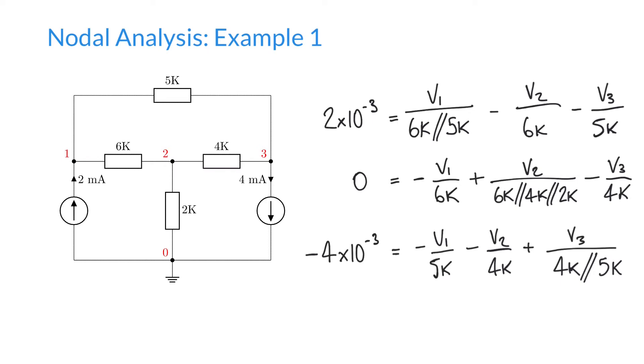These equations are going to look something like this. At node one we have a current applied to that node of two milliamps or two times ten to the minus three. That's equal to the voltage of that node. These voltages are unknown: v1, v2, and v3 are representing the voltages at these nodes one, two, and three in our circuit.